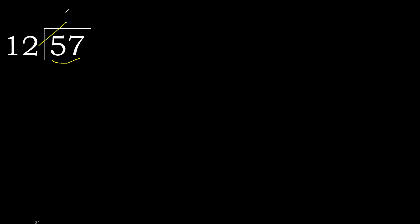12 multiplied by which number is nearest to 57 but not greater? 12 multiplied by 5 is 60 — 60 is greater. 12 multiplied by 4 is 48 — 48 is not greater.